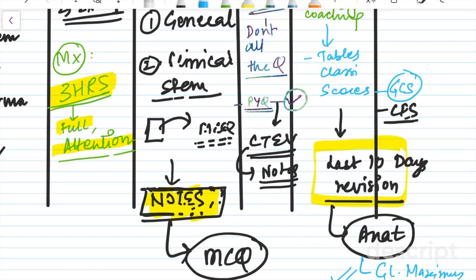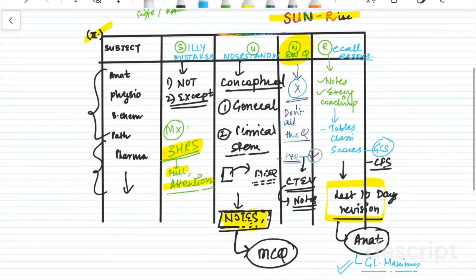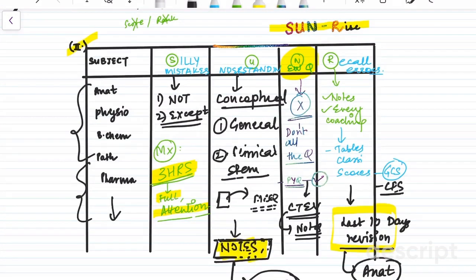So this is roughly how I reviewed my GT. This is the second section of reviewing your GT. So after you've reviewed the GT according to the sunrise formula, as I call it, you can see subject wise where you lack the most in which column exactly.